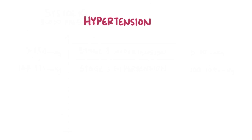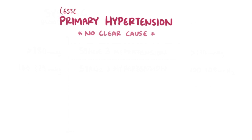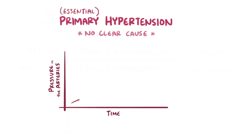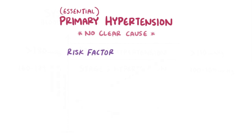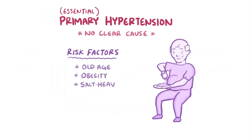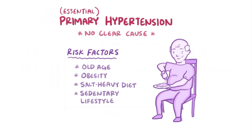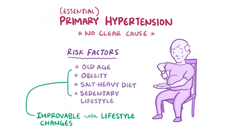About 90% of the time, hypertension happens without a clearly identifiable underlying reason, and we call this primary hypertension or essential hypertension. In other words, over time pressure in the arteries starts to silently creep up. There are a bunch of risk factors that we've identified for primary hypertension, and these include old age, obesity, salt-heavy diets, and sedentary lifestyles. With the exception of age, all of these can be improved with lifestyle changes, and those changes can help reduce hypertension.